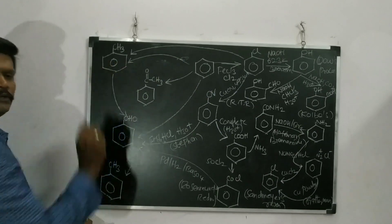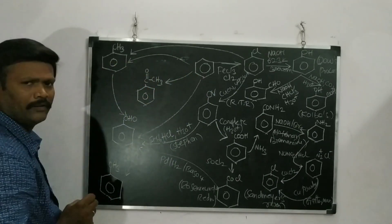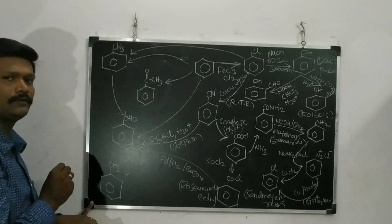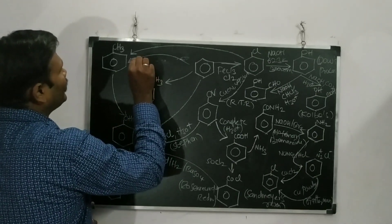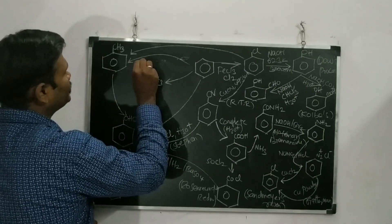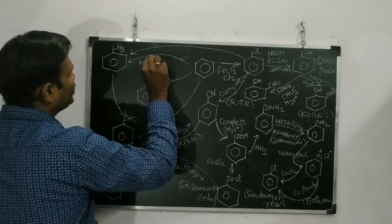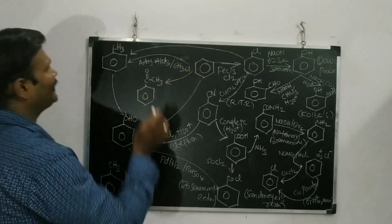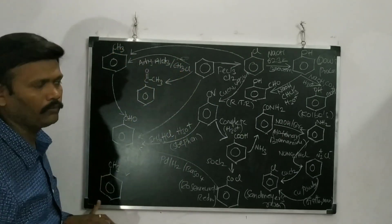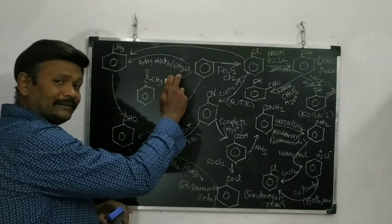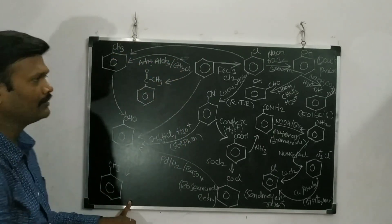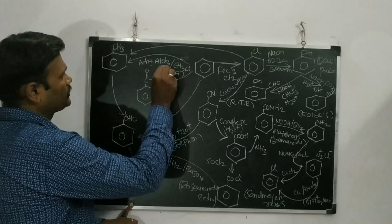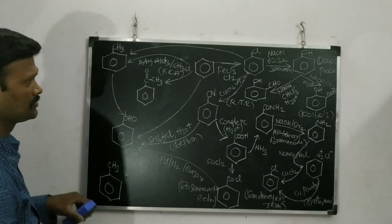From benzene to toluene: an alkyl group is added via Friedel-Crafts alkylation. This is done using anhydrous aluminium chloride (AlCl3) with CH3Cl. If you want to add a C2H5 group, you use C2H5Cl. This is the Friedel-Crafts alkylation reaction.